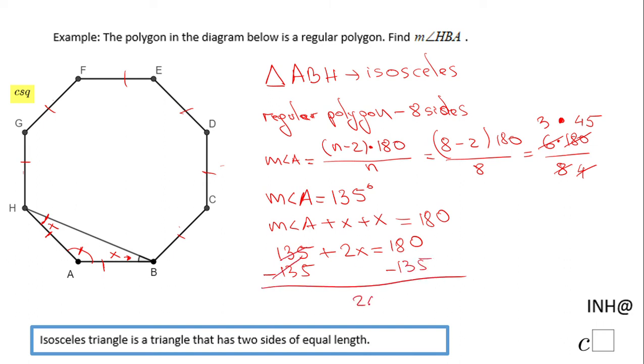And we have 2X equals 45 degrees, and the last thing, divide by 2. X will be 22.5 in decimal form for this angle. And X, remember, is nothing else than the measure of angle HBA, and that's it.